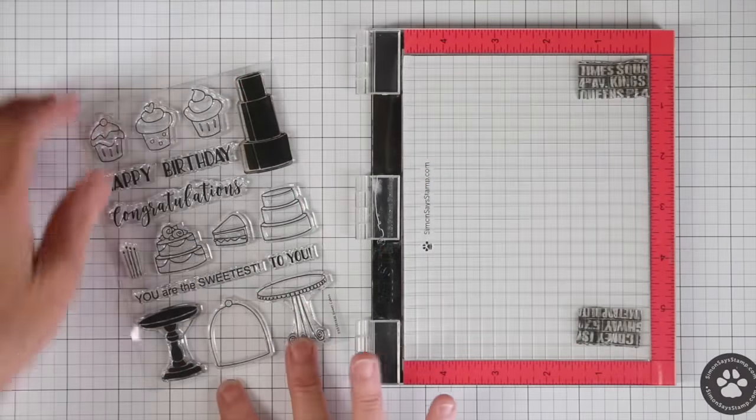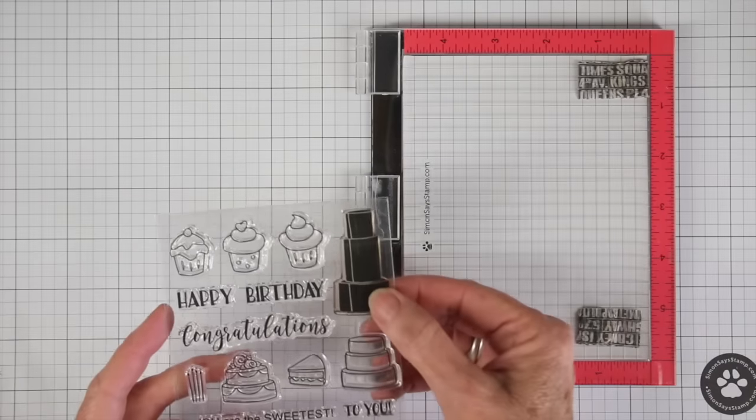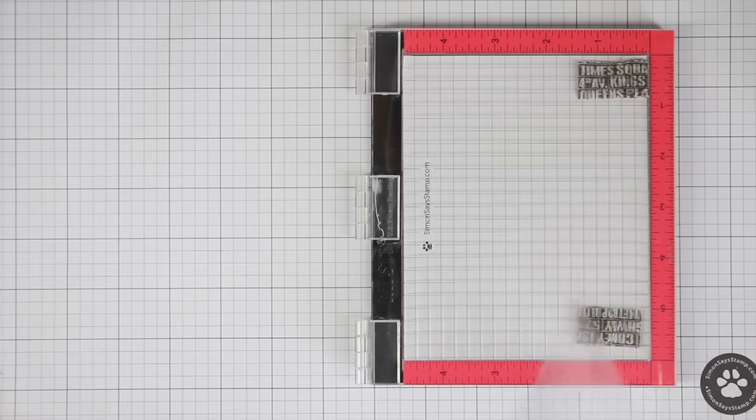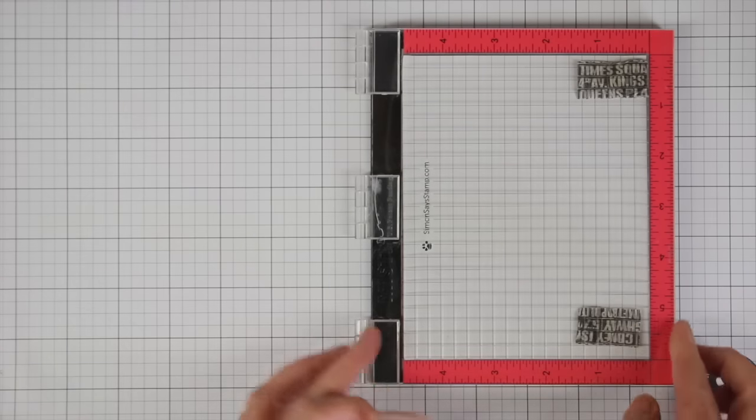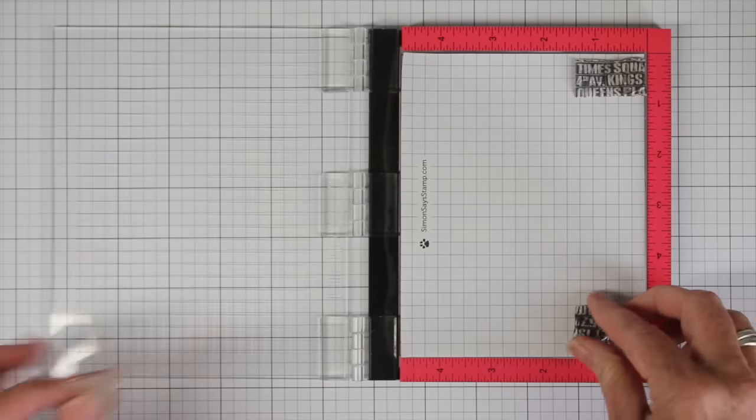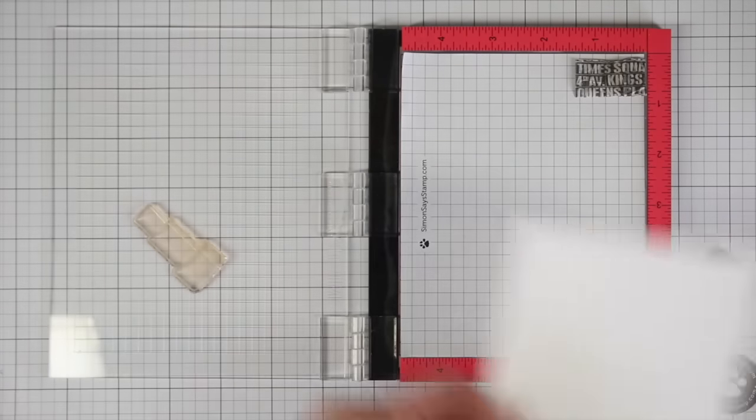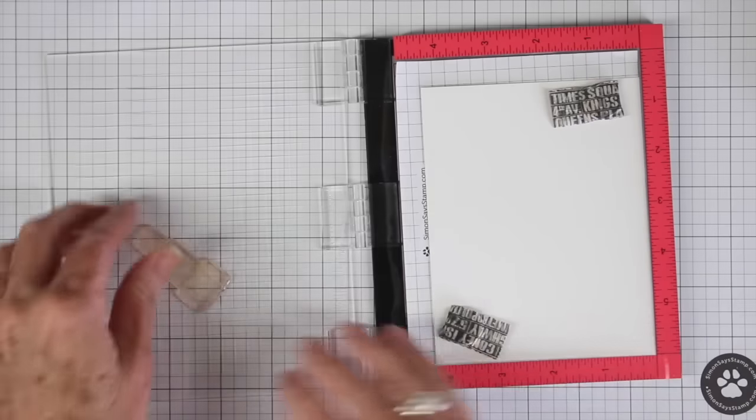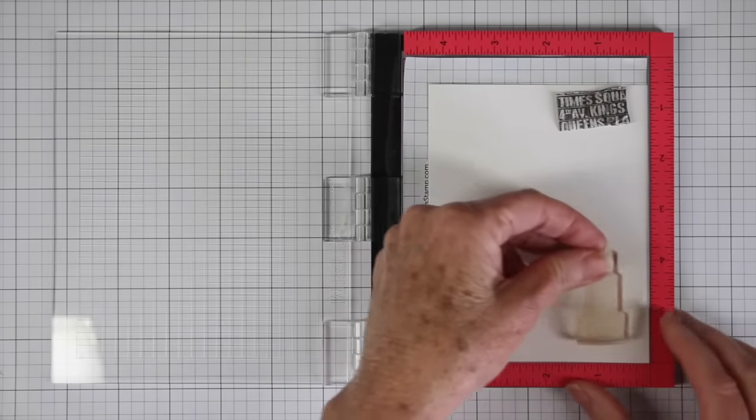The MISTI is designed as a stamp positioner. So once you put your image in there onto the board, it stays in place and you can do multi colors or you can also, if you don't stamp very well, you can stamp again. So I am going to go ahead and place a piece of paper in here. This is just regular white card stock. And I butt it up to the bottom right corner.